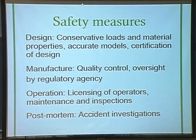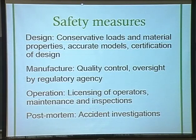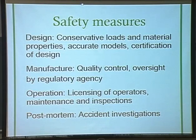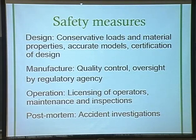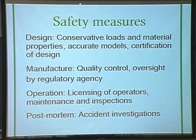The bottom line is that safety measures — the countermeasures you take to counter the uncertainty — can be applied at four stages at least. The first stage is design: you can use conservative loads, conservative material properties, and improve the accuracy of the model, then submit it to the government for certification. The manufacturer can do quality control with FAA oversight. In operation, you have licensing of operators, maintenance, and inspection. The post-mortem stage involves accident investigations.